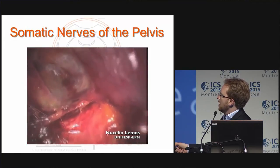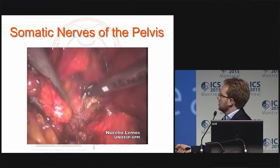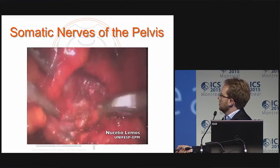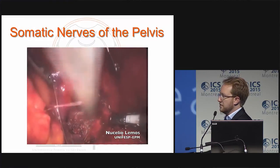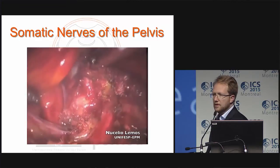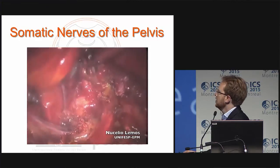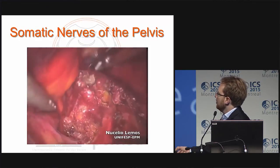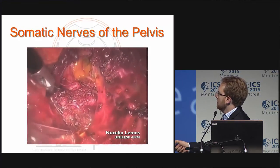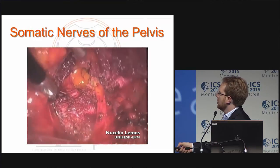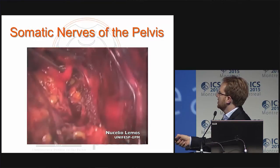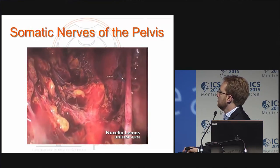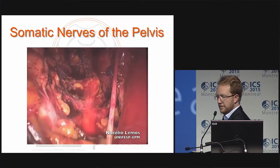I'm cutting the sacrospinous ligament to expose the pudendal nerve. This was a pudendal nerve decompression, but it's very useful to see the anatomy. This is the pudendal nerve, the sacral nerve roots coming together to form the sciatic nerve along with the lumbosacral trunk and the obturator nerve.